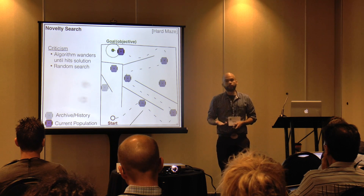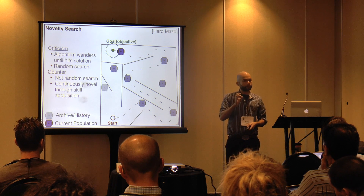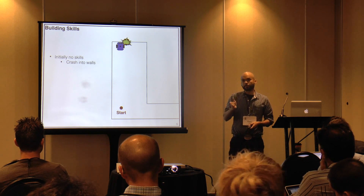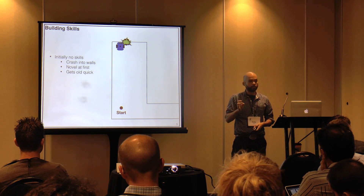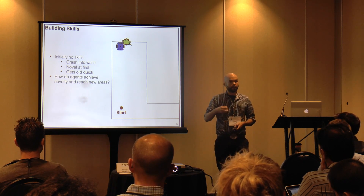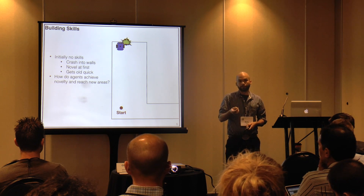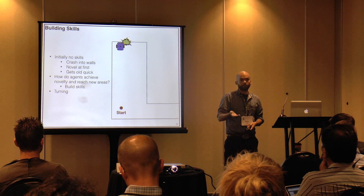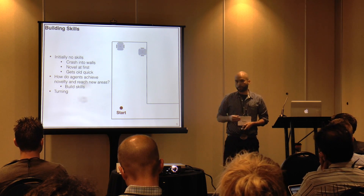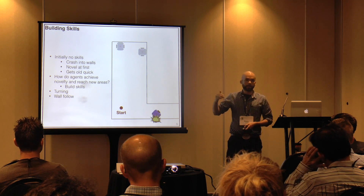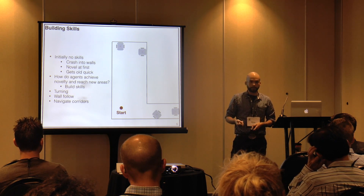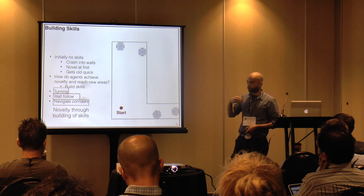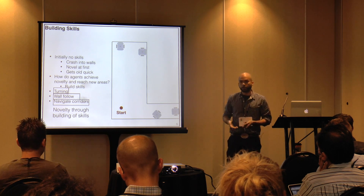The counter from supporters of Knowledge Research is that it is not random — in fact, we're building exploratory skills. Initially, the robot has no skills and simply crashes into a wall. This is novel at first, but gets old quickly. So how can the agent find new areas in the maze? One idea is that we're building skills: if you tack on a turning behavior, instead of crashing you make a slight turn and reach a different part of the maze. Add wall-following behavior, and you reach yet another area. Add corridor-navigating behavior, and by the accumulation of these skills — these stepping stones — we reach different parts of the maze and accumulate novelty.